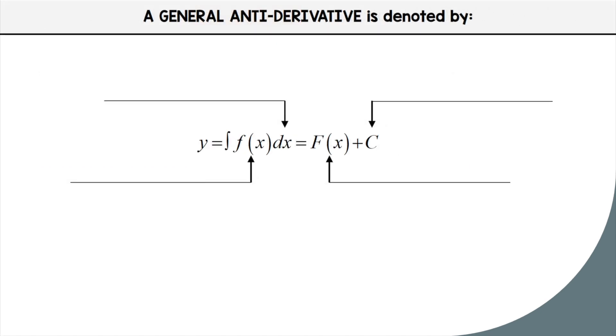So let's break this down a little bit. Right here is called the variable of integration. We saw that last lesson. c is the constant of integration. f(x), little f(x) is the integrand, and big F(x) is the antiderivative.